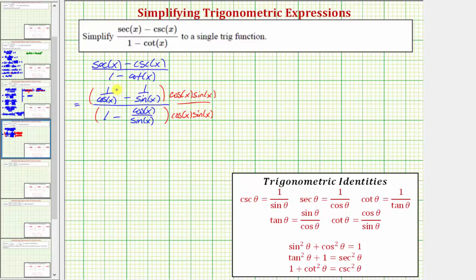Now we have four products. Looking at the top: the first product, cosine x times sine x times one over cosine x — cosine x over cosine x simplifies to one, so their product is just sine x. Then cosine x times sine x times one over sine x also simplifies, giving us a product of cosine x. So the numerator is sine x minus cosine x.